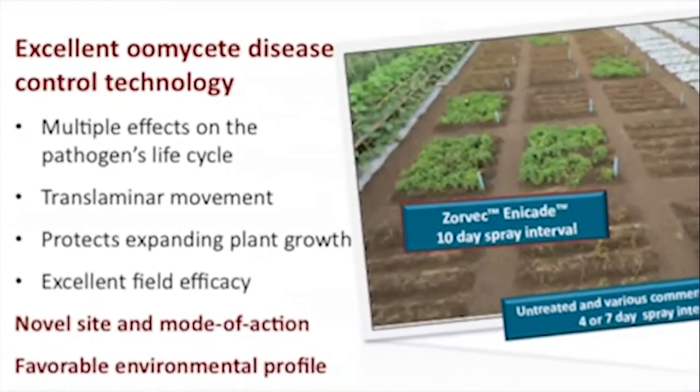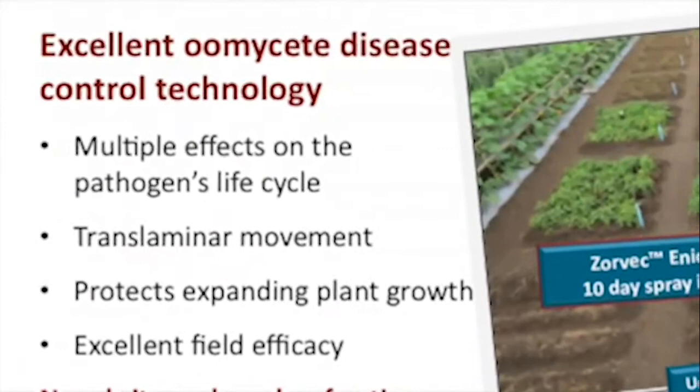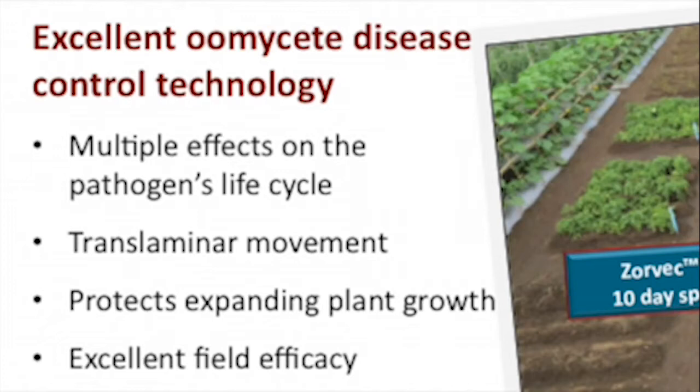In the productive cropping regions of the world, that generally means downy mildew and Phytophthora species on various crops. It affects the downy mildew lifecycle in four different areas. One of the reasons it's very effective is it's highly translaminar and has a high affinity for lipid solubility, so it gets into the waxy cuticle of the leaf very quickly.